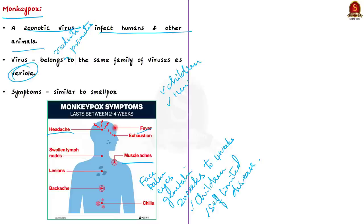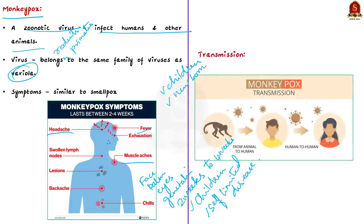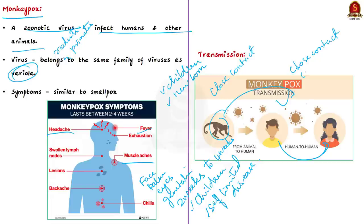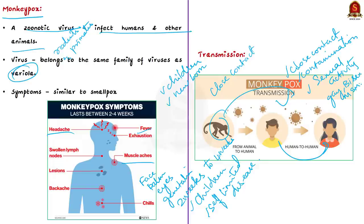Now, regarding transmission of the virus — it can be transmitted from both animals to humans and between humans. Animal-to-human transmission can result from close contact with blood, fluids, or skin lesions. Human-to-human transmission could happen through close contact and through body secretions, skin lesions, or contaminated objects of individuals affected with monkeypox. Notably, close human contact during sexual activities is believed to be a driver of the current spread, as it has predominantly spread in gay, bisexual, and MSM — men who have sex with men — communities.